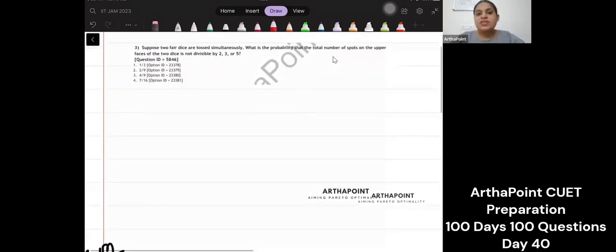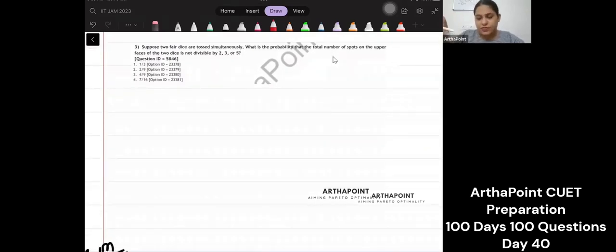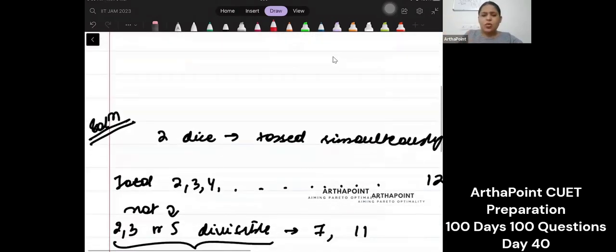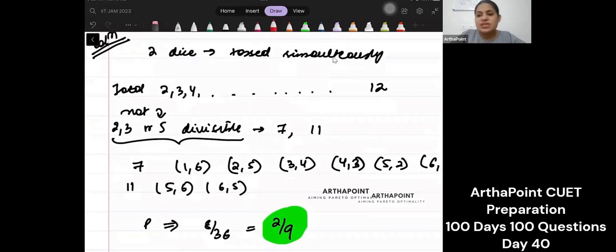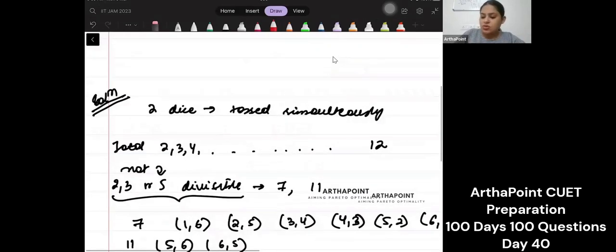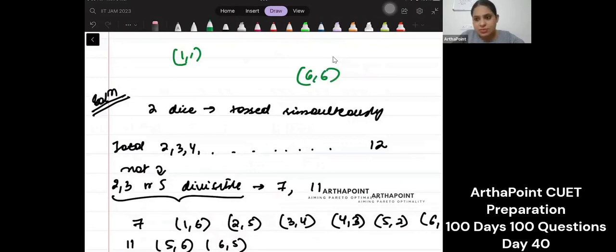Which means when you're tossing the dice, the total number means the sum. The sum can come anything between... If your dice is 1,1, the sum is 2, and the last is when both give you 6, so the sum is 12. The sum can be anything between 2 to 12.